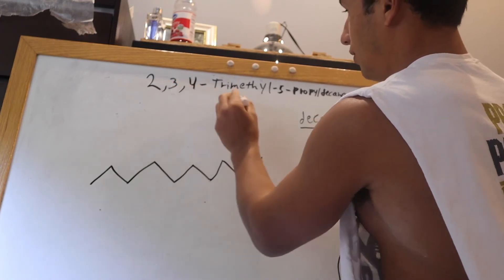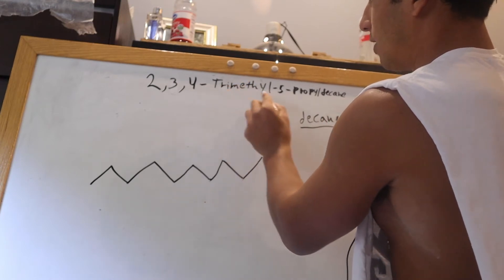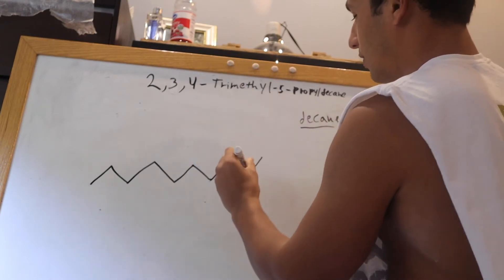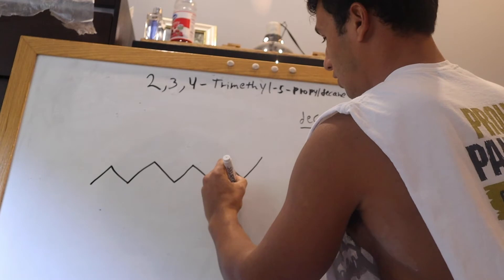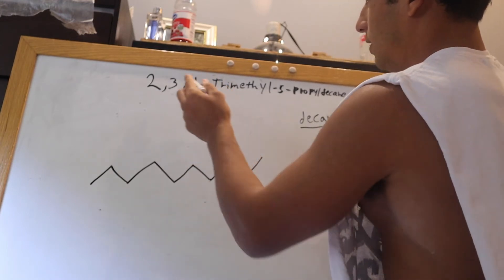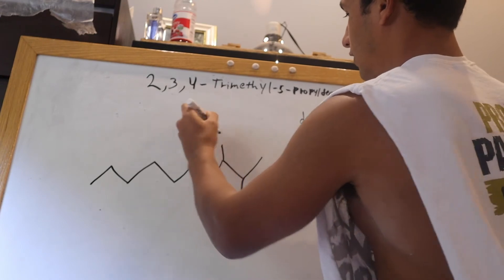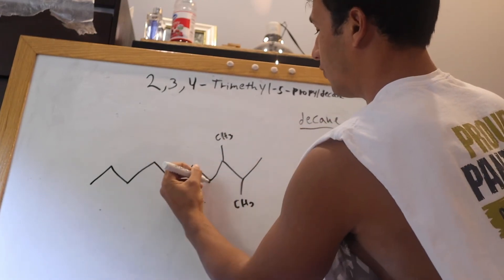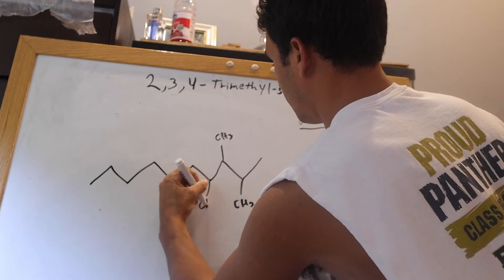carbon 2. On 2, there is a methyl group. See this trimethyl means that there's going to be 3 methyl groups. So I'll put it down here just for visualization, CH3. Now on carbon 3, we have another CH3. And on carbon 4, we have another CH3.